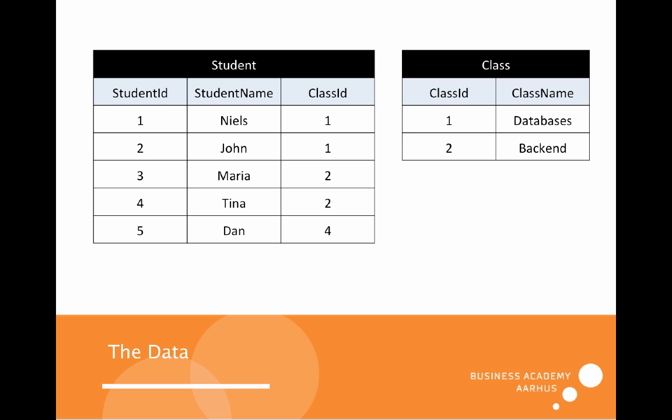This is our data that I will use for this example. We have five students and two classes. The five students are in different classes — we can see the relation between student and class through the class ID. That means Nils is in Databases because he has class ID one, like Databases has. John is also in Databases, Maria in Backend, and Tina in Backend. Then we have Dan, but class ID 4 — chosen for this example because there is no class with ID 4, so we can see what happens when there's no relation between a student and a class.